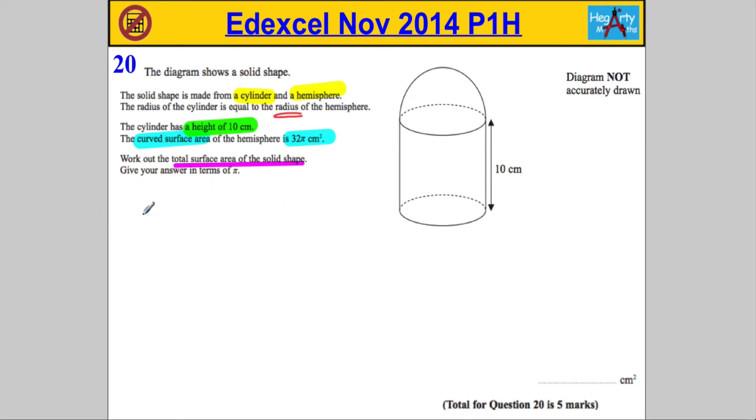If you look at the front of your paper, you'll find that the surface area of a sphere is given as 4πr². So the surface area of a hemisphere, or half a sphere, is going to have to be half that. So that must be 2πr².